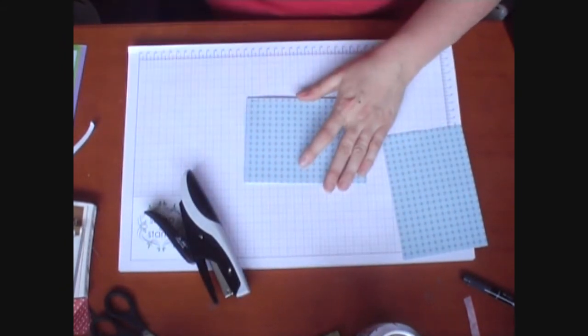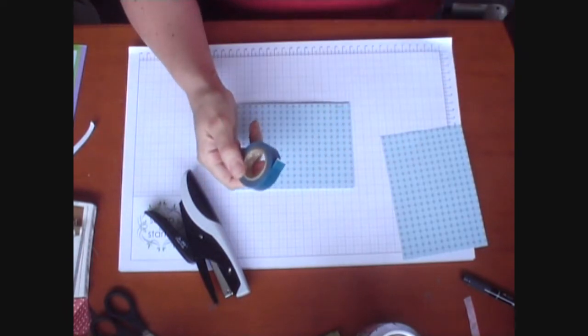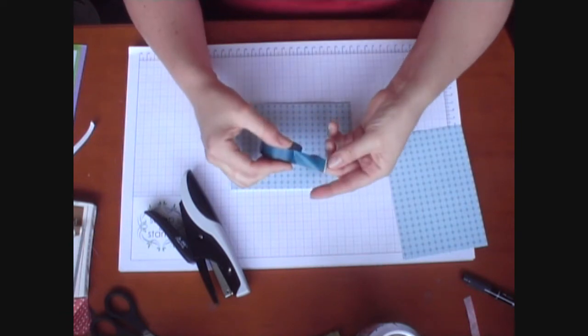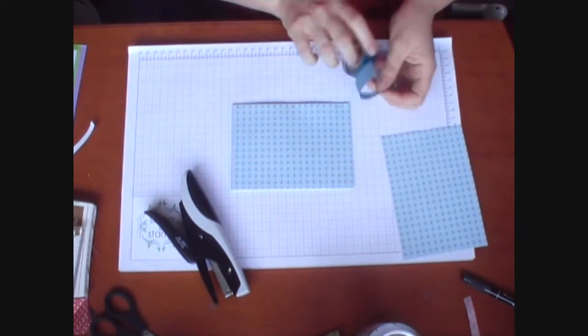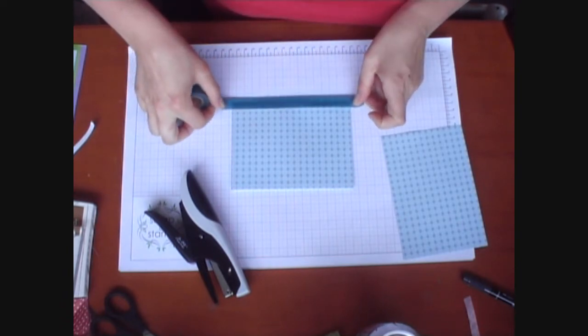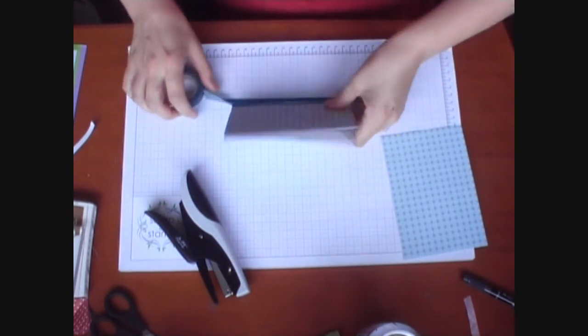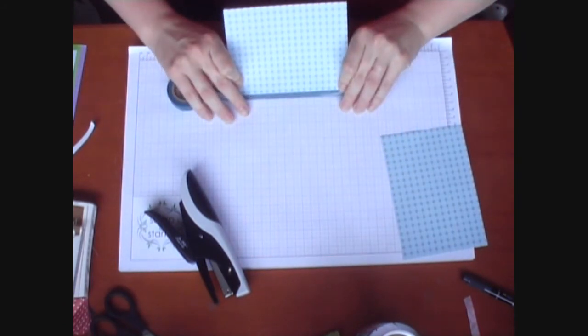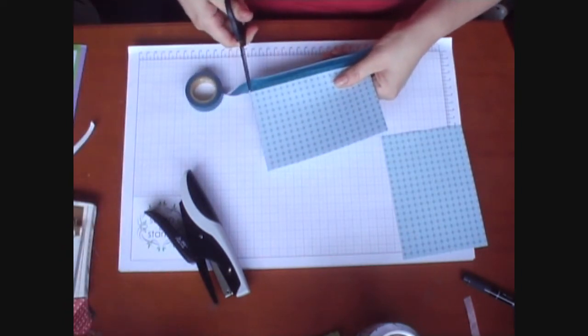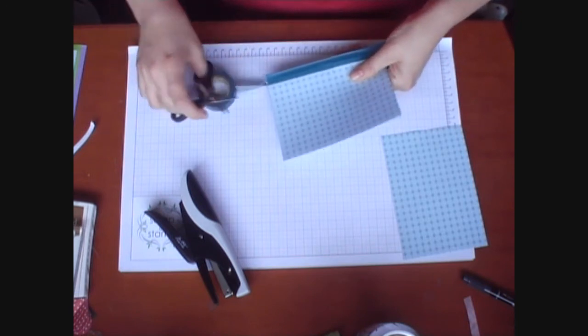And then I'm just going to use some Japanese washi tape which is also available on our website. It's a masking tape and it comes in lots of different colours and designs. So I'm just going to use that to hide the staples. I'm just going to put it down the side there. And because it's masking tape it's a bit forgiving if you stick it on something by mistake. And just cut the edge off there.